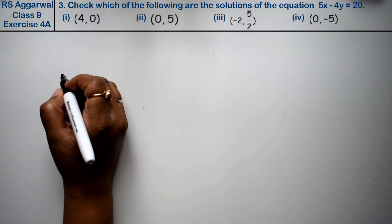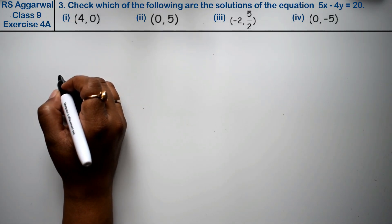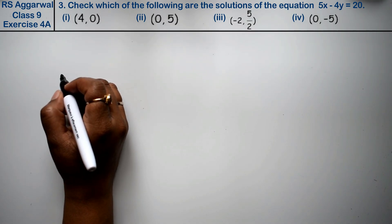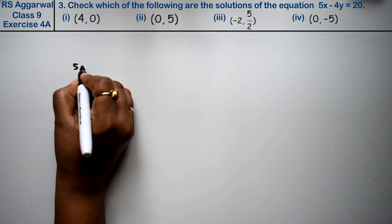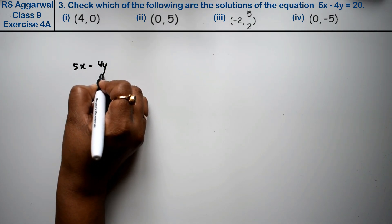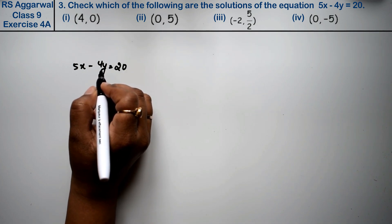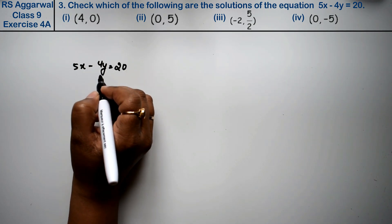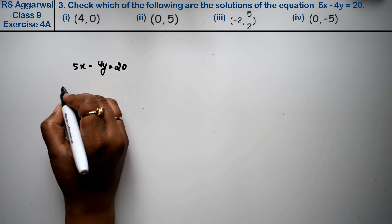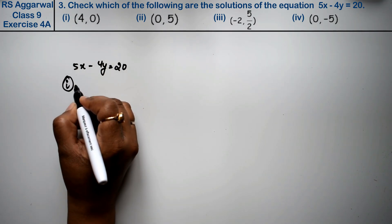Let's do question number 3 of exercise 4A, that is linear equations in 2 variables. Question number 3 is: check which of the following are the solutions of the equation 5x minus 4y equals 20. We have to check which solution is the solution from the given points.